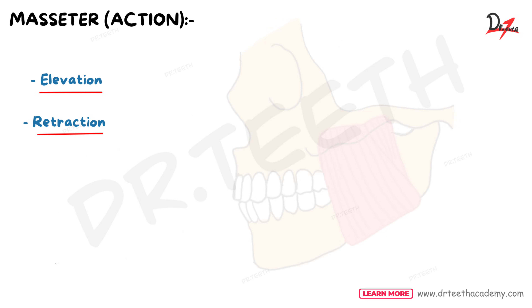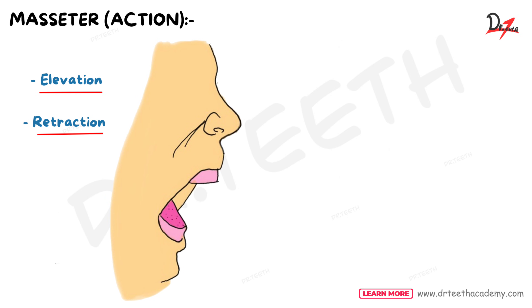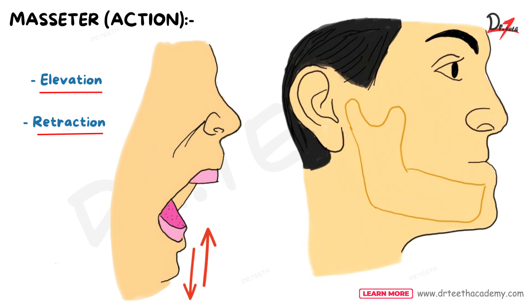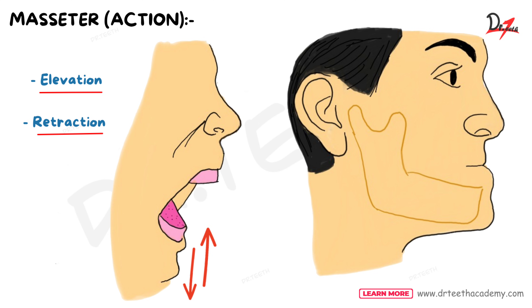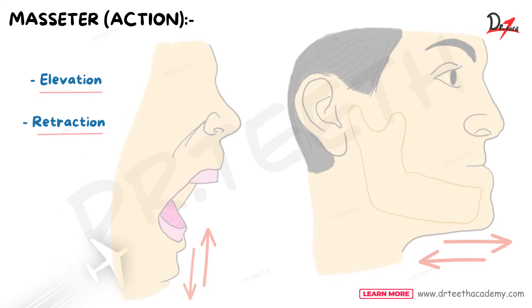For understanding its action: when we chew something, we open our mouth and the mandible goes downward. This muscle — the masseter — helps to get back to the original position by elevating the mandible upward. Retraction means pulling back — when the mandible is in its normal position or slightly ahead, it can be moved backward to the original position or a little more backward from normal. That is retraction.